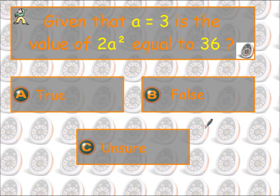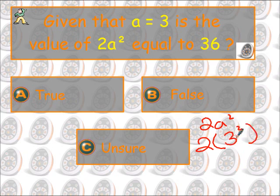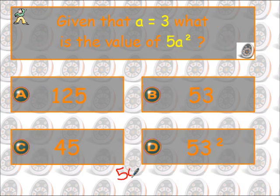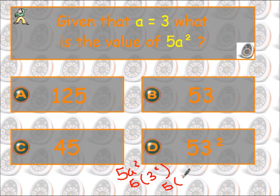Alright, now we've got 2a squared. So 2a squared — note that only the a is squared, not the 2a. So this is going to be 2 times whatever a is, which is 3, and that 3 is squared. 3 squared is 9, so this is 2 times 9, which is 18. So this is false, because they asked if it was 36. Next, we've got 5a squared when a is 3. So 5 times 3 squared — 3 squared is 9 — 5 times 9 is 45.